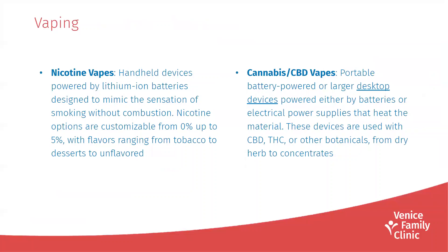Now we'll go on to vaping. Nicotine vapes are handheld devices powered by lithium-ion batteries designed to mimic the sensation of smoking without combustion. Nicotine options are customizable from zero percent up to five percent, with flavors ranging from tobacco to desserts to unflavored. On the other hand, cannabis or CBD vapes are portable battery-powered or large desktop devices powered either by batteries or electrical power supplies that heat the material. These devices are used with CBD, THC, or other botanicals from dry herbs to concentrates.